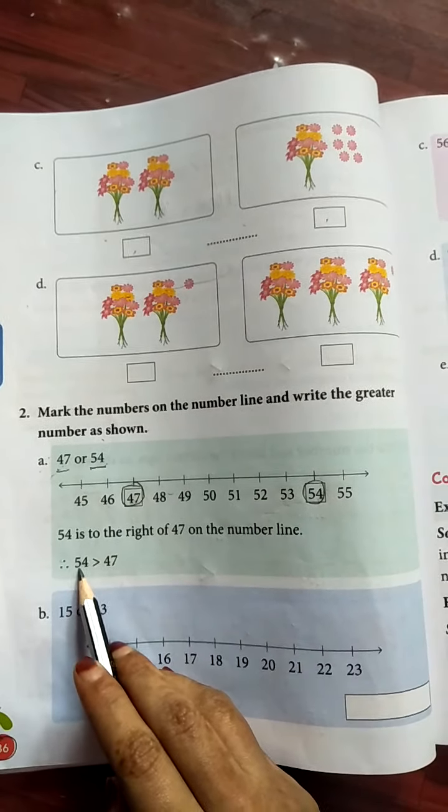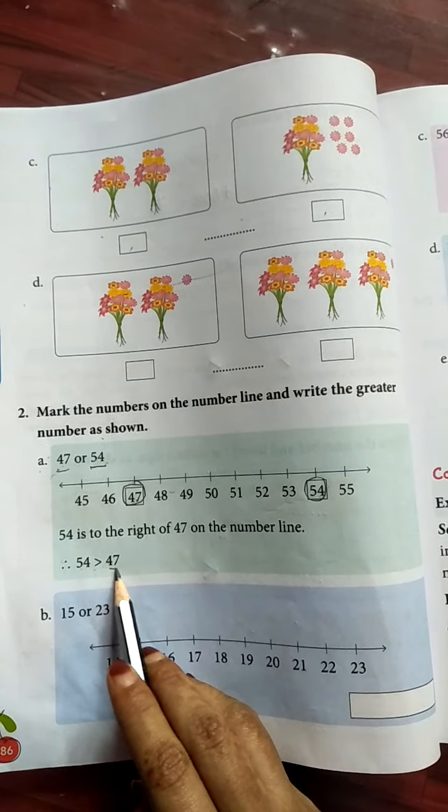So 54 is the right of 47 on the number line. Therefore, 54 is greater than 47.